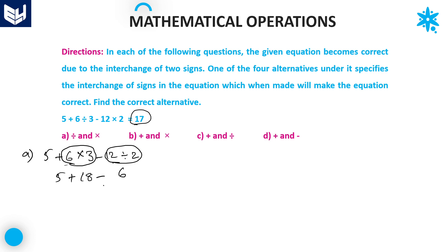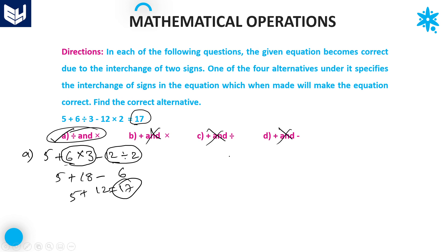We get 5 + 18 - 6. That is 18 - 6 = 12, and 12 + 5 = 17. We got the same result as in the given equation. Therefore the required answer is option A — interchange the division symbol and multiplication symbol, and the equation will be correct. There is no need to check options B, C, or D. Option A is the right answer.